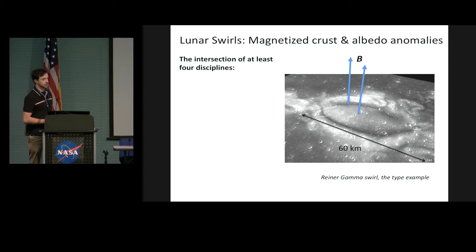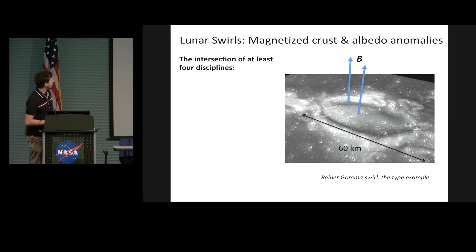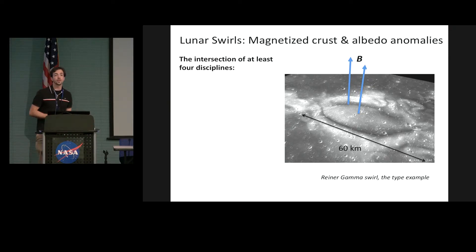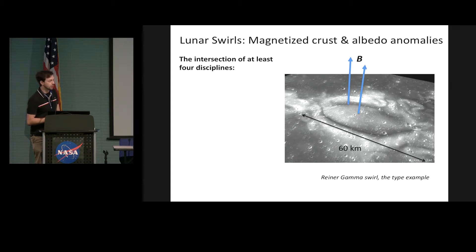This is known as a lunar swirl. Lunar swirls are locations where you have magnetized crust and these sinuous albedo features on the soil. Swirls are extremely interesting features in the solar system because they sit at the intersection of numerous fields in planetary science. Here on the right is Reiner Gamma, the type example — it's about 60 kilometers across.